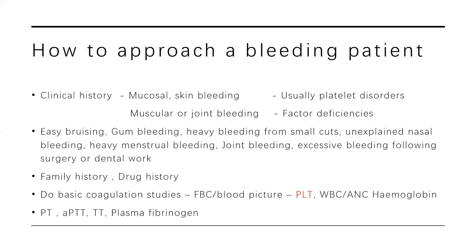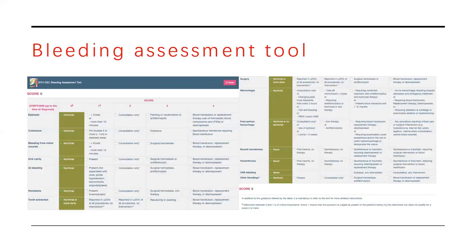If from the history you think the patient is a bleeder, you then do the basic coagulation testing and proceed with further investigations. The bleeding assessment tool is a standard tool available online. It gives scores, and if the marks are more than six, the patient is usually considered a significant bleeder. These questions help assess whether bleeding is clinically significant or not.